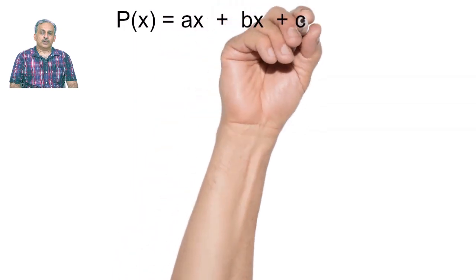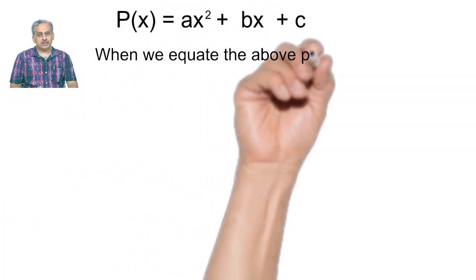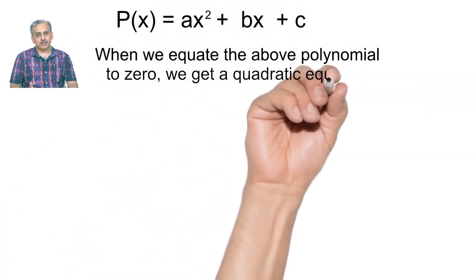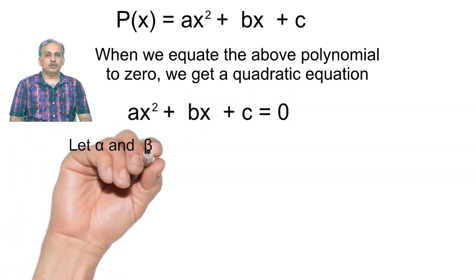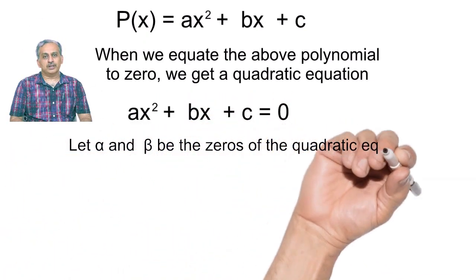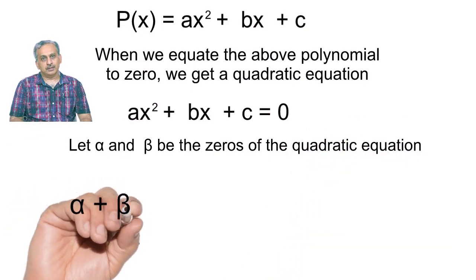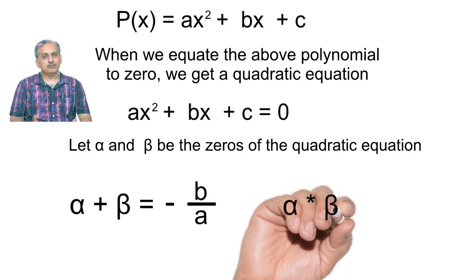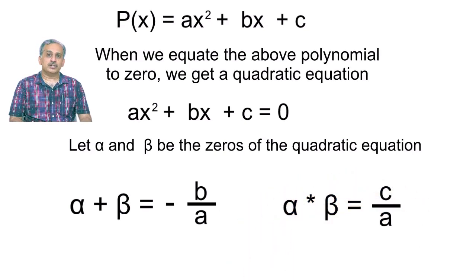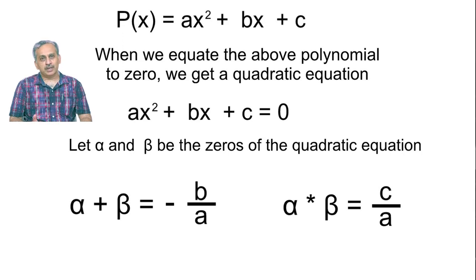If you equate a quadratic polynomial to zero, it is called a quadratic equation. The zeros of the polynomial are called the roots of the quadratic equation. So if a quadratic equation ax square plus bx plus c equal to zero is given, the same relationships apply: if alpha and beta are the roots, then alpha plus beta is minus b upon a and alpha into beta is c upon a.